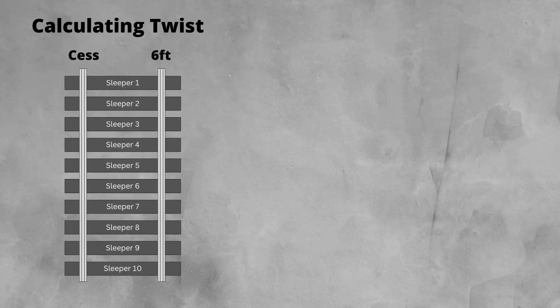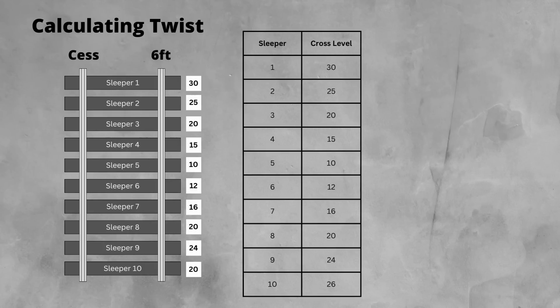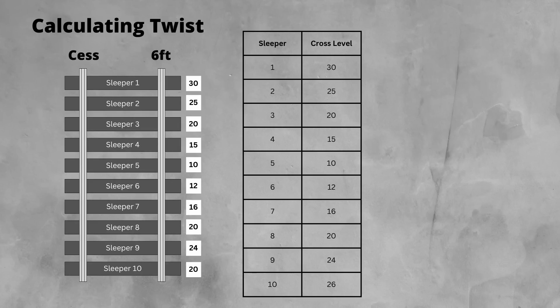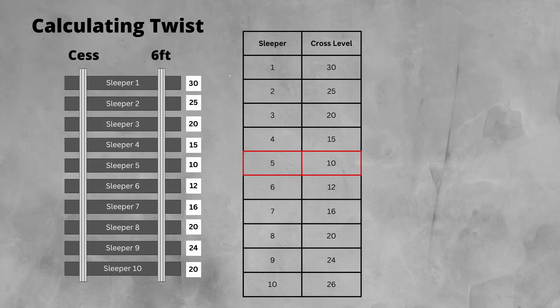First up, we'll look at a static twist on a single rail. In this case, the 6ft rail. We have the cross level values recorded at the site in the table. These are also shown next to the sleeper on the side that is higher. So in our example, the 6ft leg is 30mm higher than the cess leg at sleeper 1. We can see that the issue is the dip centring around sleeper 5.